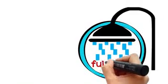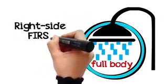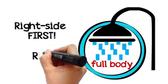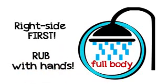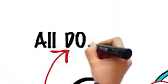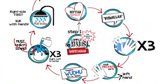Then pour water and wash the entire body, beginning with the right side then the left, while rubbing it with your hands so that you are sure you haven't missed any part. These are the etiquettes of the complete ghusl.